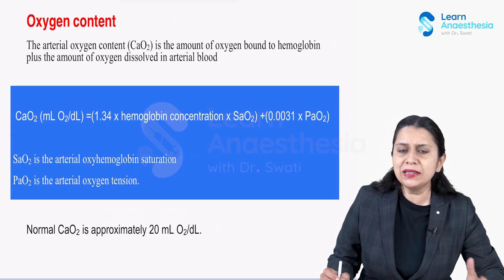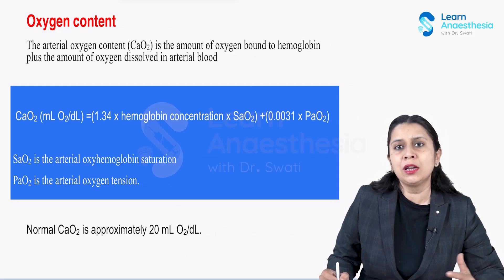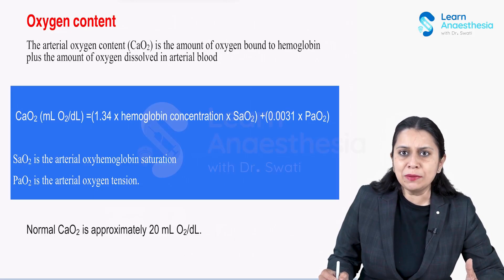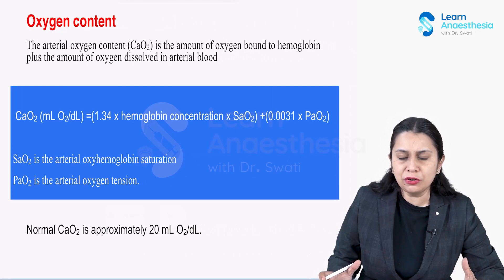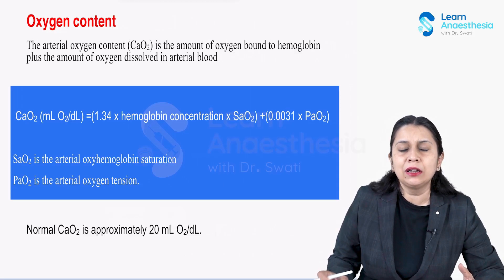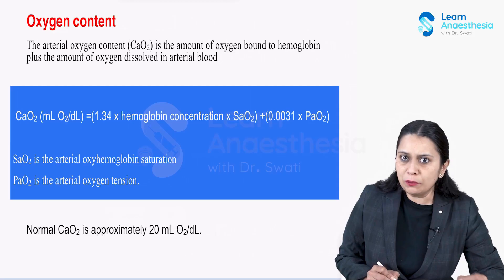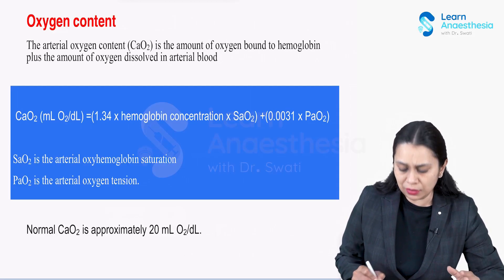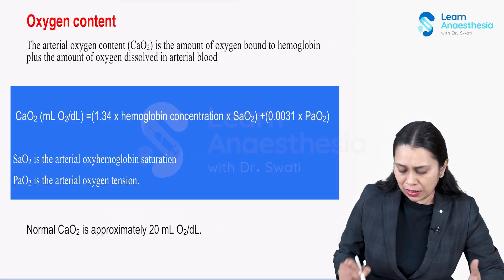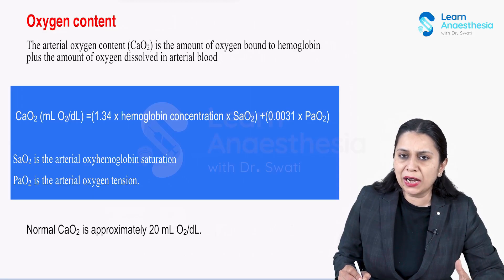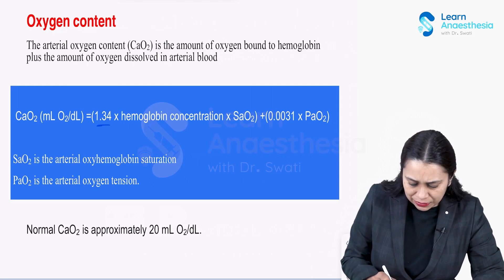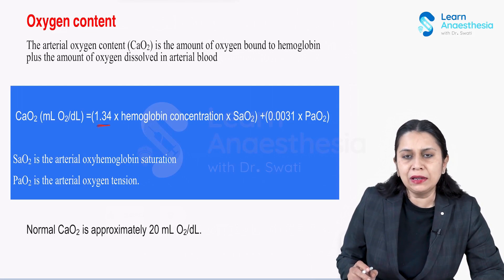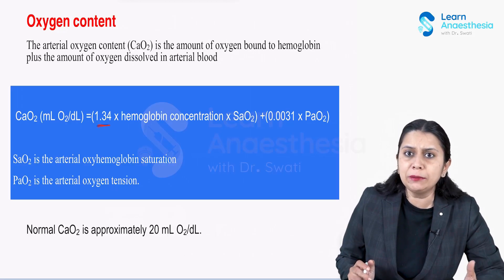Blood is the vehicle through which oxygen is delivered from lungs to the tissues. Blood carries oxygen 99% bound to hemoglobin and 1% dissolved in the blood. To calculate the total oxygen content of the blood, we need to sum up these two ways. The constant 1.34 represents 1.34 ml of oxygen carried per gram of hemoglobin.